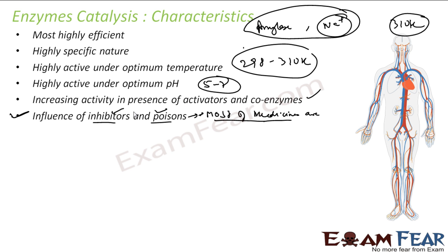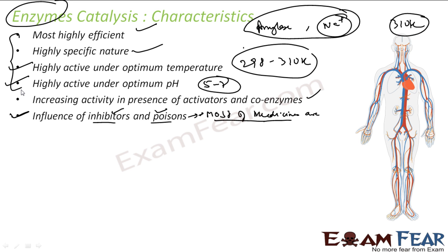So these were the characteristics of the enzyme catalyst: they are efficient, they are specific in nature, they are active under optimum temperature and optimum pH, and they are highly impacted by activators and coenzymes, and they have a huge impact from inhibitors and poisons.